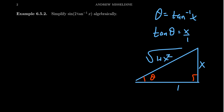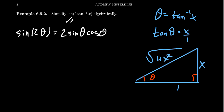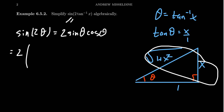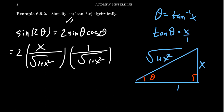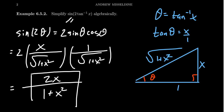Now we're ready to go. We compute sine of two times tangent inverse of x. But tangent inverse of x is just theta, so we get sine of two theta. This makes us think of the double angle identity for sine: two times sine of theta times cosine of theta. Sine of theta is opposite over hypotenuse, giving x over the square root of one plus x squared. Cosine of theta is adjacent over hypotenuse, giving one over the square root of one plus x squared. In the numerator we get 2x, and in the denominator the square root of one plus x squared times itself gives one plus x squared. So the expression simplifies to the rational function 2x over one plus x squared.